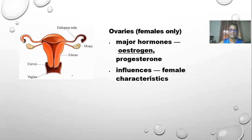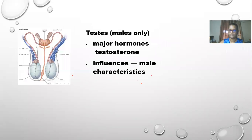Then we have ovaries, which while not strictly part of the endocrine system, produce eggs and sperm respectively. Females have ovaries whose major hormones are estrogen and progesterone, influencing female characteristics. Overproduction of progesterone can cause masculine characteristics. The testes in males produce testosterone, which influences male characteristics.